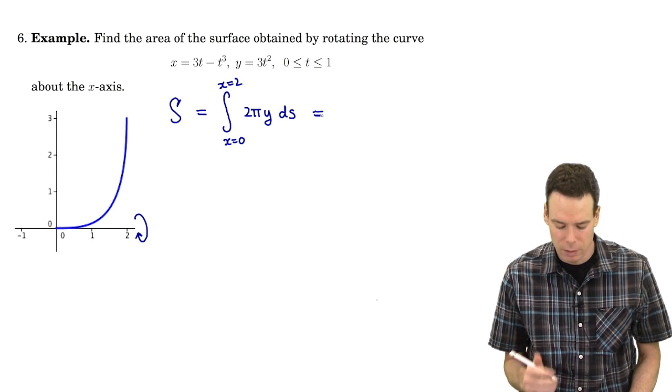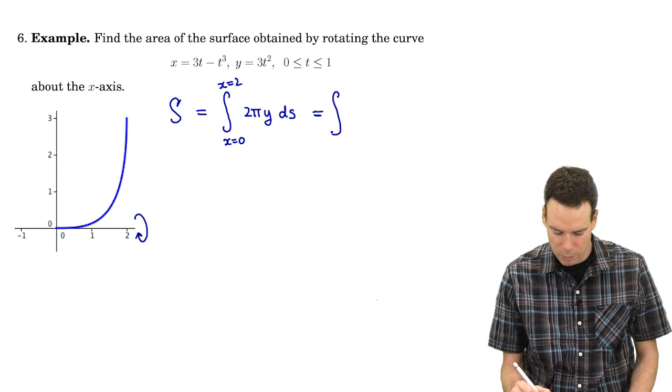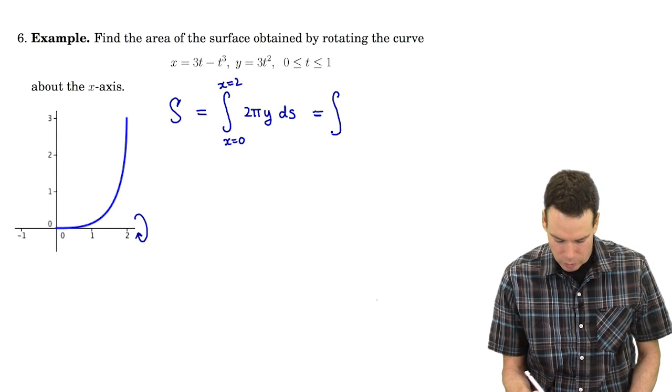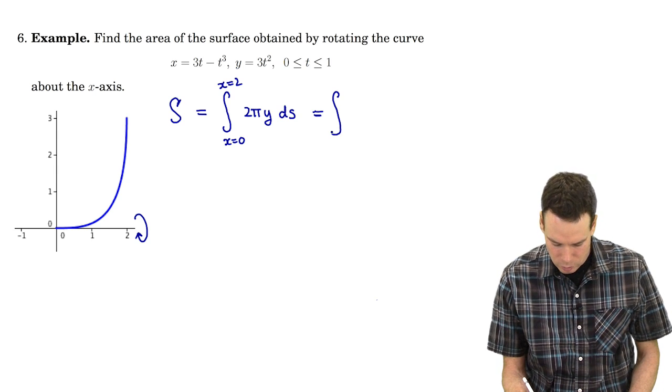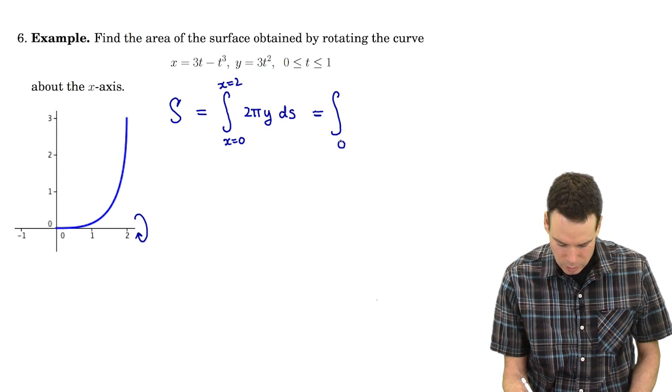Now I say okay I'm dealing with a parametrized curve so make sure we express it in terms of our parameter t. So we're going from x equals 0 to x equals 2, that's corresponding to t equals 0 to t equals 1.